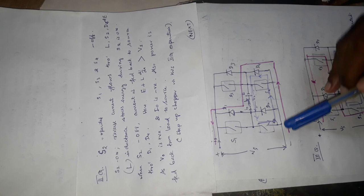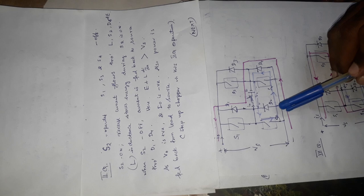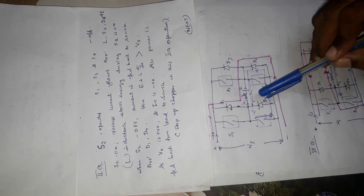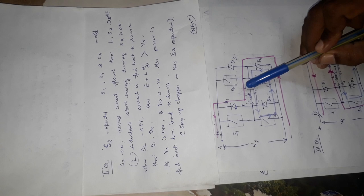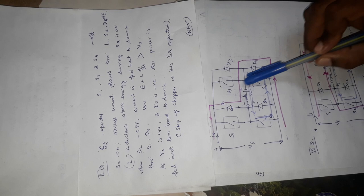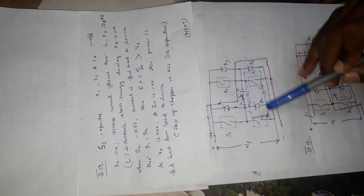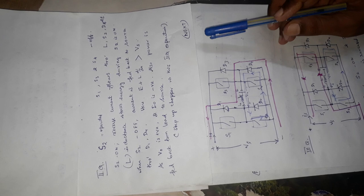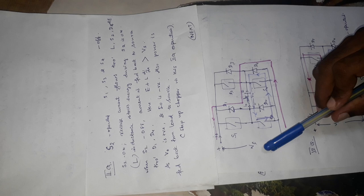When S2 is off, current is fed back to the source through D1 and D4. Here, E plus L di/dt is greater than the source voltage, meaning the output voltage is greater than the source voltage. Output voltage is positive and output current is negative. Power is fed back to the supply, that means from load to source. This operation is called step-up chopper operation.